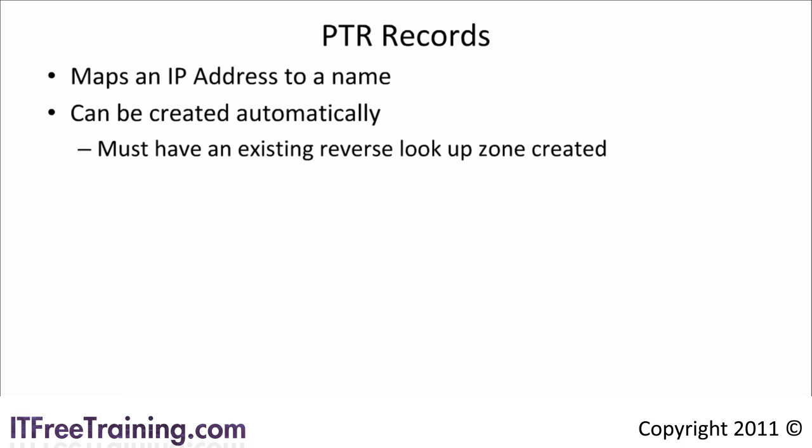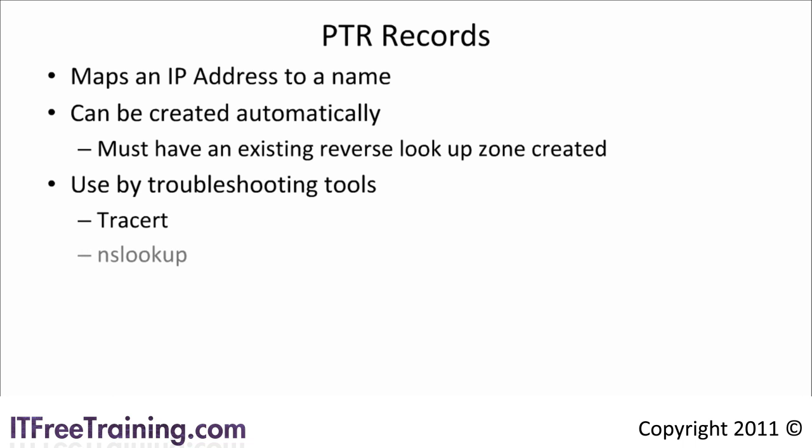In the real world I have worked on large networks that don't have a single reverse lookup zone created. For Active Directory to run you don't require any reverse lookup zones — they are mainly used for troubleshooting tools such as traceroute and DNS lookup. Even though you can get away without them, when troubleshooting network problems you may find an IP address in a log file, and it is useful to perform a reverse lookup to find the host name for that IP address.